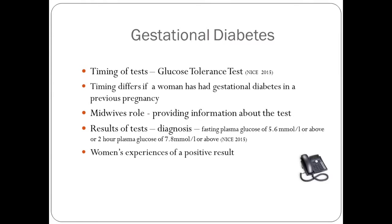In America they test all women at booking. In the UK, NICE recommend that we screen in response to risk factors. That blood test is usually undertaken between 26 and 28 weeks of gestation, unless the woman has had gestational diabetes in a previous pregnancy, in which case screening is recommended between 16 and 18 weeks, and if that result is negative, it should be repeated again at the 26 to 28 week period.